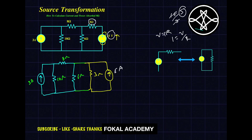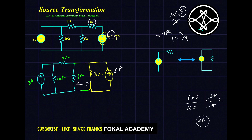Now the 6 ohm resistor and the 3 ohm resistor are in parallel with each other. We replace them with a single equivalent resistor. The parallel combination is (6×3)/(6+3) = 18/9 = 2 ohms. So the overall resistance for this parallel combination is 2 ohms.